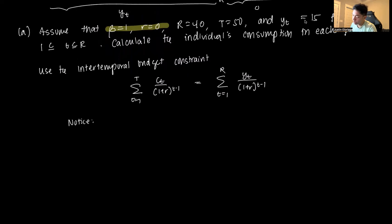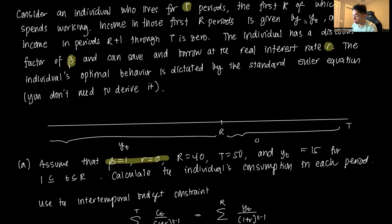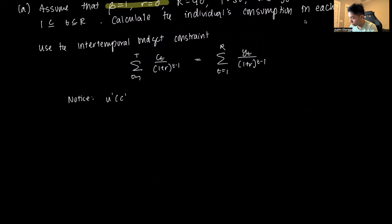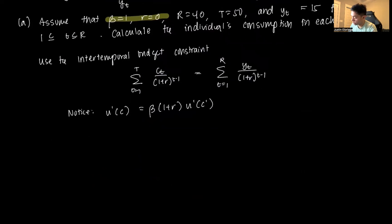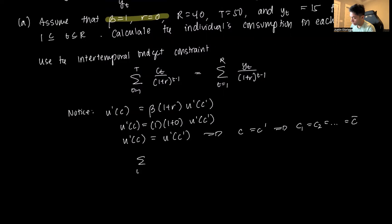Notice the problem tells us to use the standard Euler equation. Recall the Euler equation is U'(C)=β(1+R)U'(C'). This problem tells us beta=1 and R=0, so U'(C)=U'(C'), which implies C=C'. In this context, consumption is the same throughout time - Ct is just C-bar.